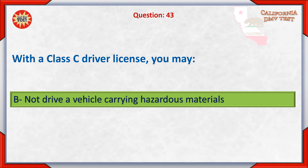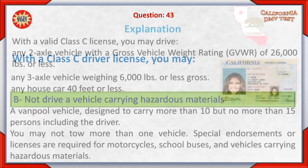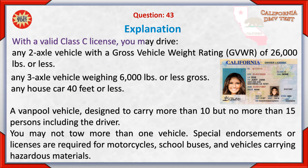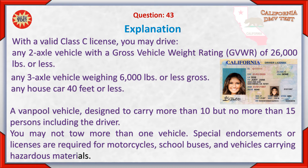With a Class C driver license, you may drive a vehicle with a gross vehicle weight rating of 26,000 pounds or less, any three-axle vehicle weighing 6,000 pounds or less gross, any house car 40 feet or less, or a vanpool vehicle designed to carry more than 10 but no more than 15 persons including the driver. You may not tow more than one vehicle. Special endorsements or licenses are required for motorcycles, school buses, and vehicles carrying hazardous materials.